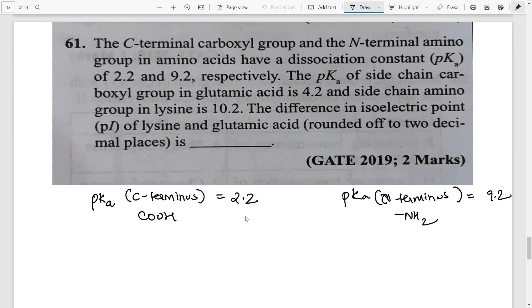Now the pKa of side chain of the carboxy group of glutamic acid. So this is the pKa of glutamic acid which is the COOH group given as 4.2 whereas the side chain, I should represent it as pKR. Then the side chain for pKR for lysine is given that is 10.2. Calculate the difference in the isoelectric point of lysine and glutamic acid.